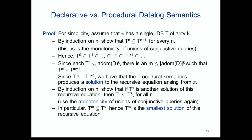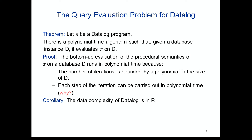Corollary: the data complexity of Datalog is in polynomial time. We perform polynomially many iterations, each consisting of a union-of-conjunctive-queries evaluation which is also polynomial. So the whole process is polynomial time. Cook's path system problem — expressing reachability in a path system with axioms and a ternary rule of inference — was shown by Cook in 1974 to be complete for polynomial time, proving data complexity of Datalog is polynomial-time complete.